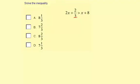I'm going to keep it as is for the first time solving here. Subtract x from both sides. 2x minus x is x, plus 2/3 is greater than, and this x minus x is 0, so we just have the 8 left over.